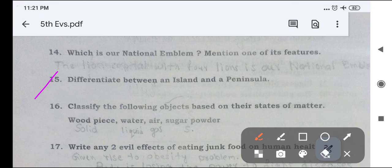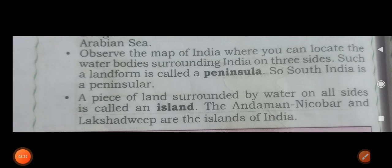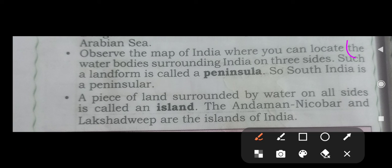Next question, 15th question, differentiate between an island and a peninsula. The water body surrounding India on three sides, such a landform is called a peninsula. So South India is a peninsula. A piece of land surrounded by water on all sides is called an island. The Andaman, Nicobar and Lakshadweep are the islands of India. This is the right answer.